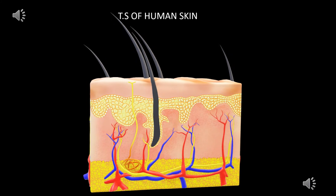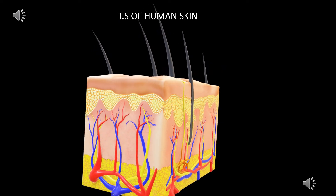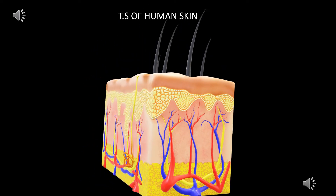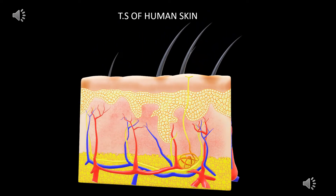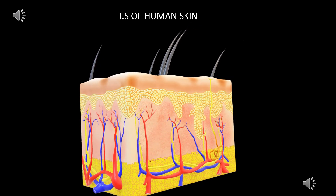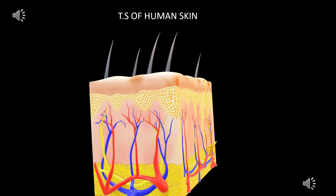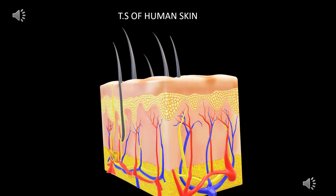The human skin has two types of glands. The first is the sebaceous glands, also called the fat glands. The sebaceous glands secrete lipids.